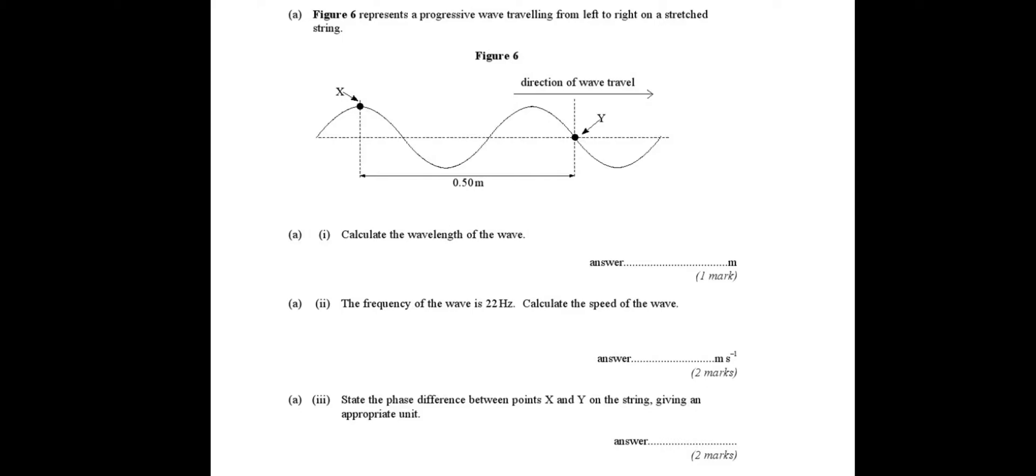Figure 6 represents a progressive wave travelling from left to right on a stretched string. Part A1, calculate the wavelength of the wave.